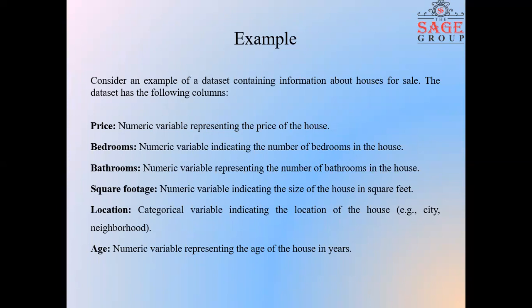Next is the location column, which has the categorical variables. It indicates the location of the house, for example, city, neighborhood or any relevant place. And next column contains the age. It contains the numerical value and represents the age of the house in years. So let us take one by one every step of data preprocessing by using this dataset.